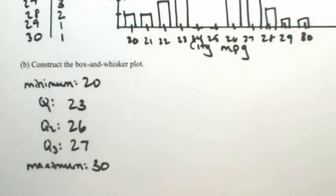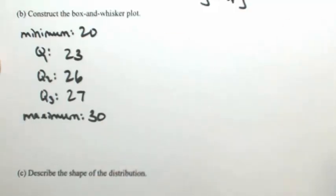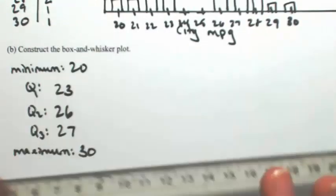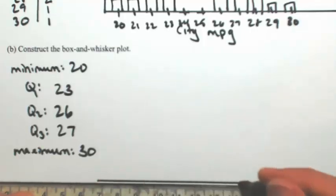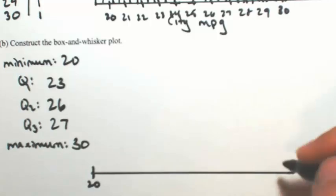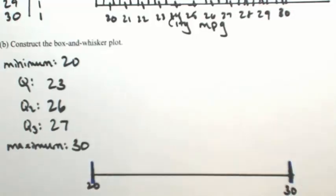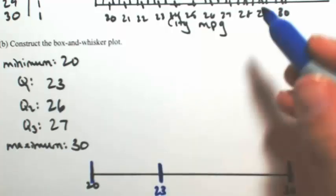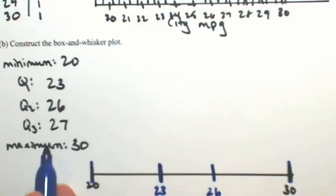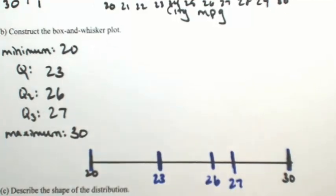Let's see what this histogram would look like if it were written as a box-and-whisker plot. The first thing we'll do is set up a number line just like we did with the city miles per gallon. I'm trying to match it up to the histogram, so 20 and 30. Q1 is at 23, Q2 is at 26, and Q3 is at 27. The box is going to take place around Q1, Q2, and Q3, and then the whiskers are on the left and the right.